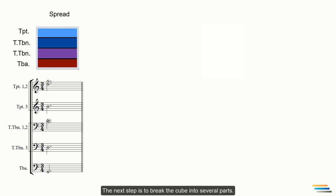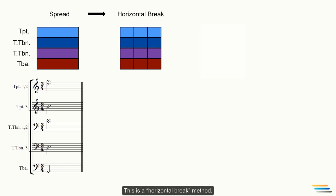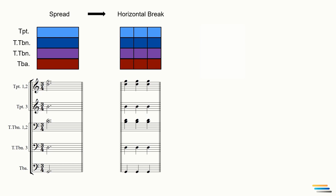The next step is to break the cube into several paths. Since this is a 3-4 time signature, we can break it into three paths. This is a horizontal break method.